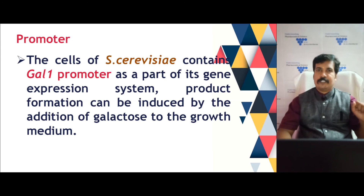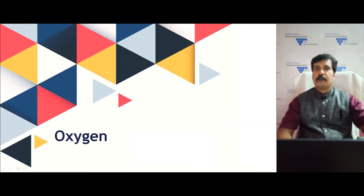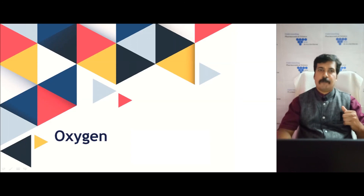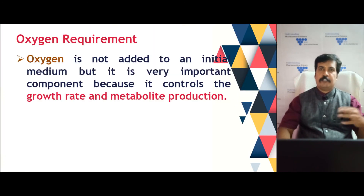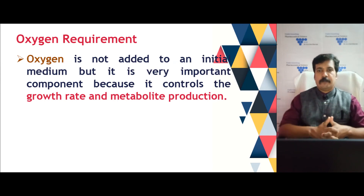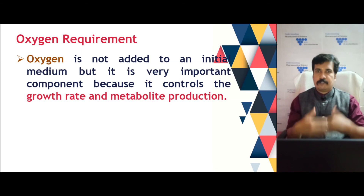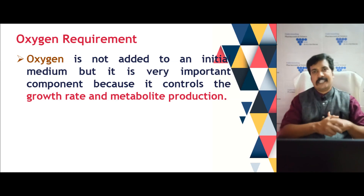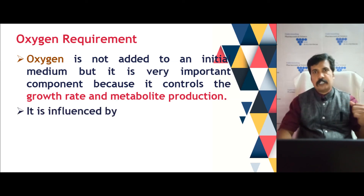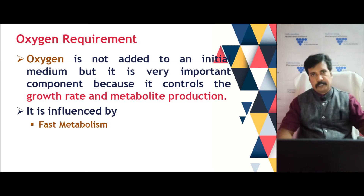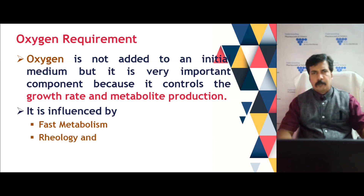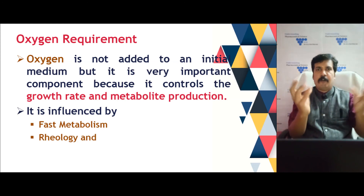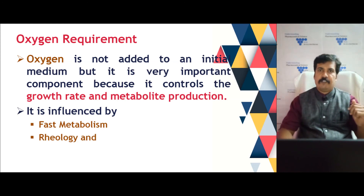In certain aerobic fermentation processes, oxygen must be supplied from outside. Oxygen is a vital component of all aerobic fermentation because it controls growth as well as metabolic production of the product. It is supplied through an aerator channel after filtration. Oxygen influences the rate of metabolism — faster metabolism leads to higher energy production and higher product formation. Additionally, oxygen bubbling through the media changes the rheological pattern of the fermentation media and also acts as an anti-foaming agent.